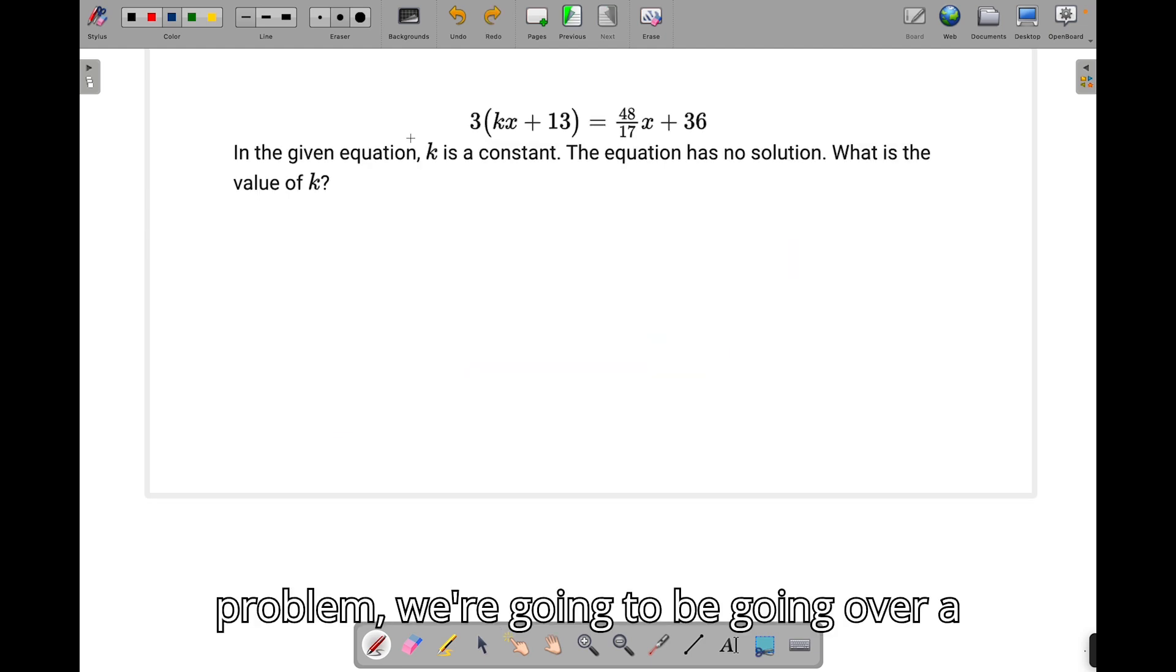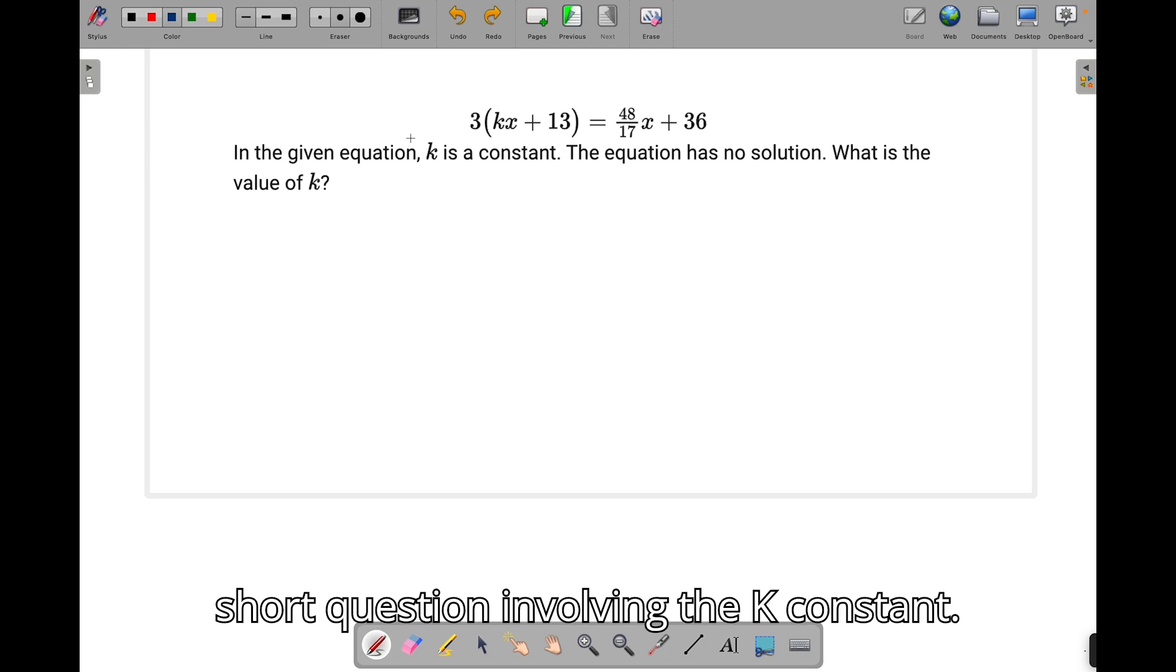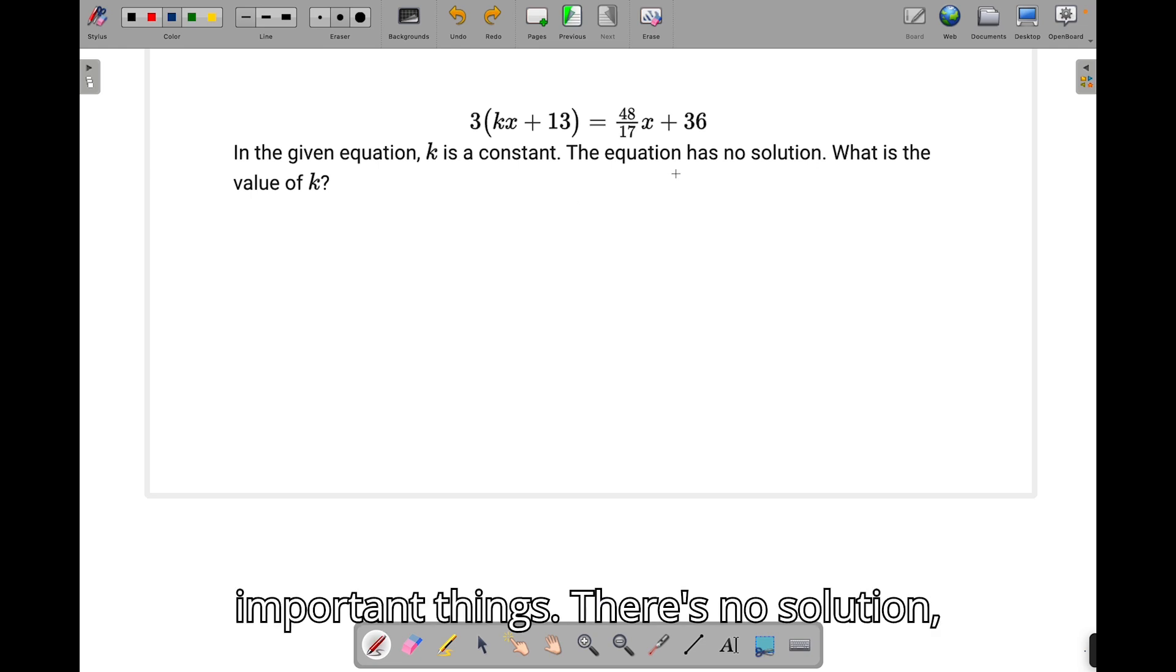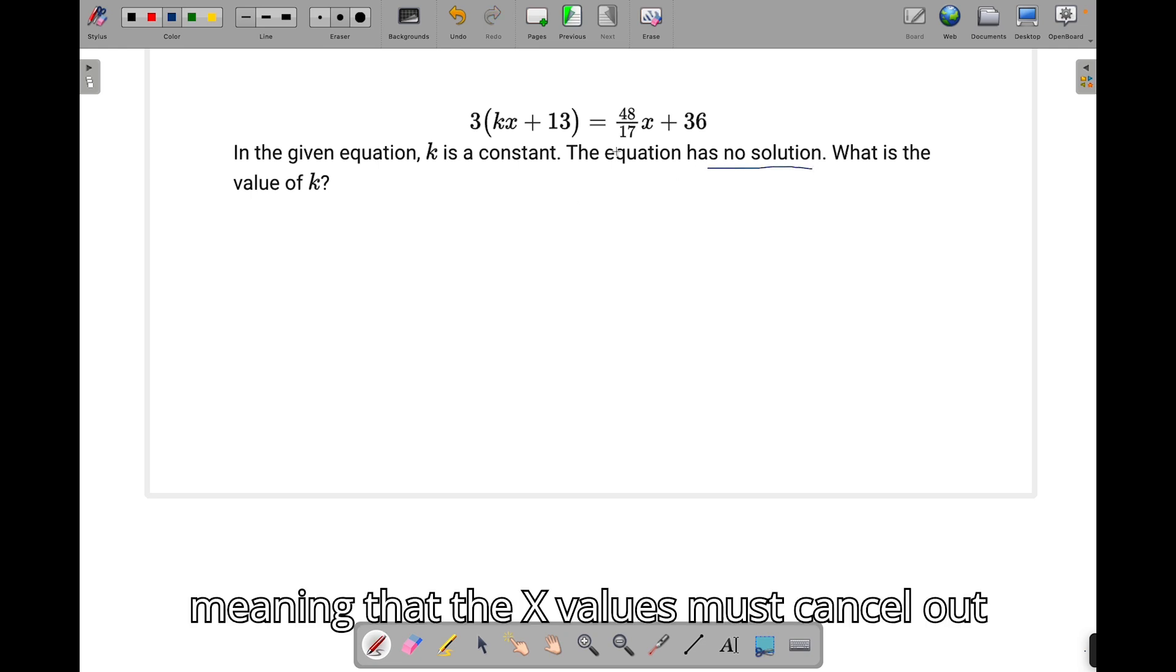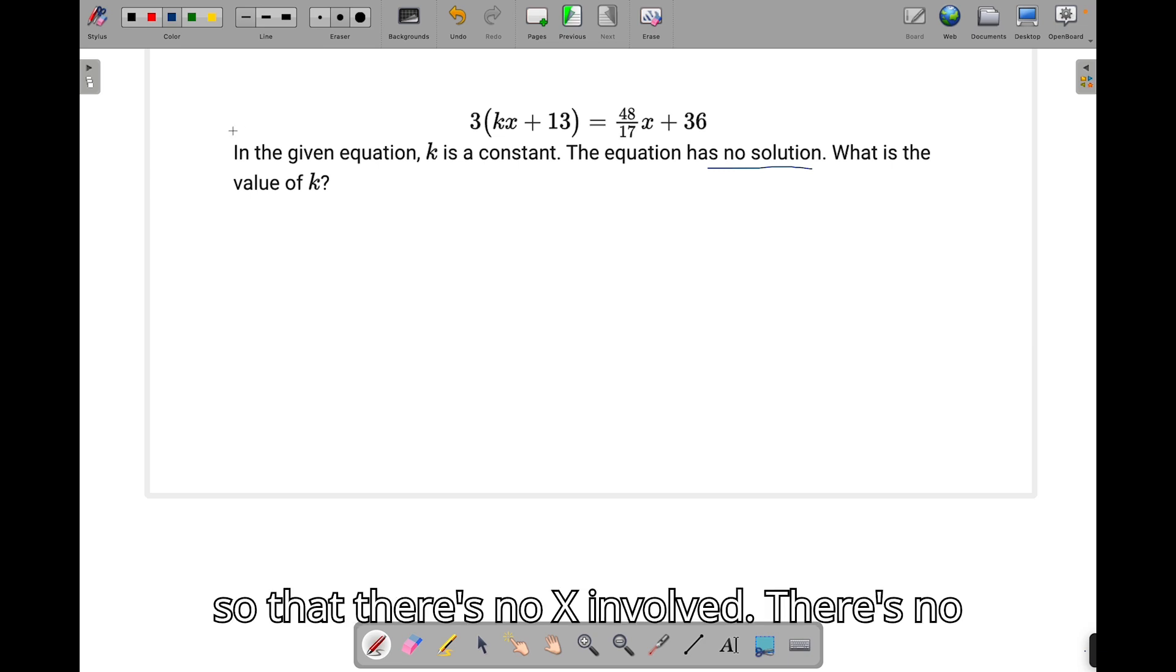For this last problem, we're going to be going over a short question involving the k constant. Pause to read. So once you pause it, let's notice some important things. There's no solution, meaning that the x values must cancel out so that there's no x involved. There's no way there's going to be multiple solutions. And we have our value k. That's what we're looking for.